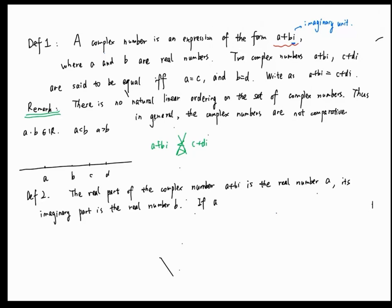if A equals 0, then the number is called a pure imaginary number. Since its real part is 0, it's just called a pure imaginary number.